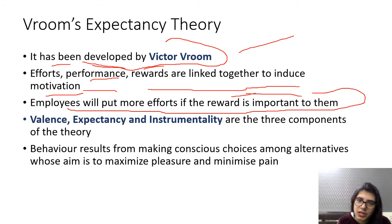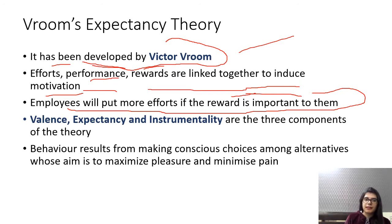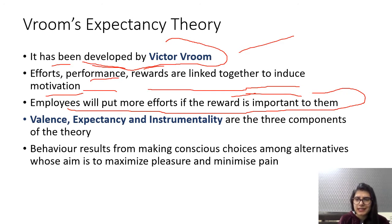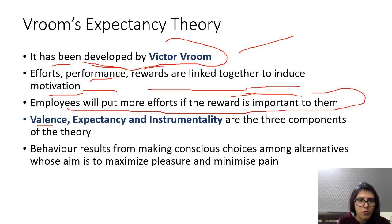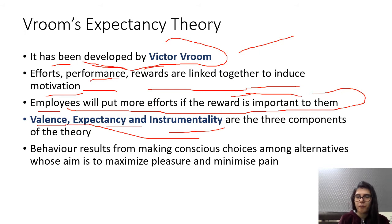If employees are told that achieving their target will get them a bonus of rupees 2 lakh, and that reward is important to that person, they will put a lot of effort to achieve the target. For some employees, money is not the most important thing — for example, a holiday to Italy or France may be more motivating. If traveling is important to an employee, they would put in a lot of effort to go on a tour with their family. The three most important components of this theory are valence, expectancy, and instrumentality.